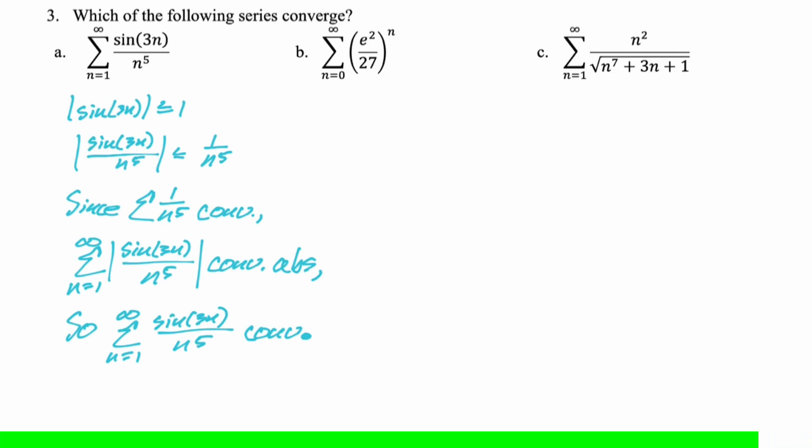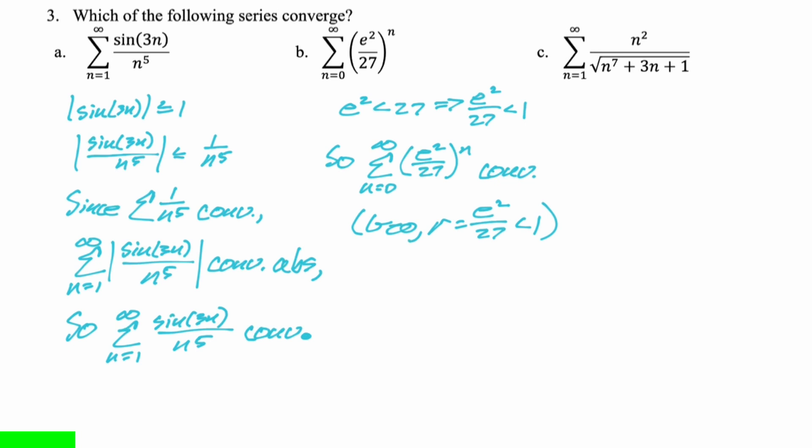Good stuff. Let's take a look at the next one. We have e squared over 27. That's a constant to the n. This is just geometric. So we just have to figure out if e squared over 27 is bigger than or less than 1. E squared, I mean, e is less than 3. So e squared is less than 9. So e squared is definitely less than 27. Which would mean that e squared over 27 is less than 1. If that's the case, we converge. So I'm going to say this converges. And my reasoning is geometric.